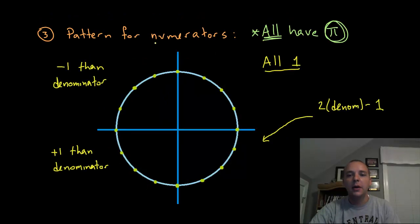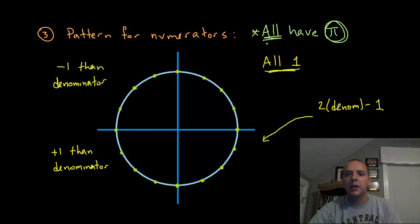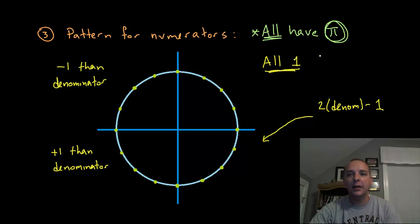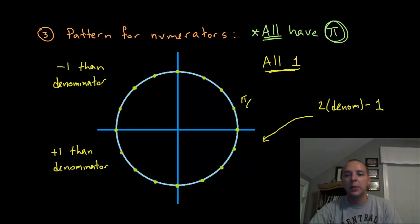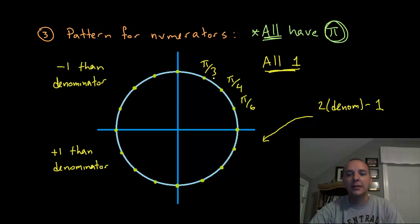Now what's the pattern for the numerators? This varies quadrant to quadrant. First of all, all the radian angles have pi — remember that. In the first quadrant all the numerators are one pi: pi over 6, pi over 4, and pi over 3, combining with what we know about the denominators. So these are just a pi in the numerator.